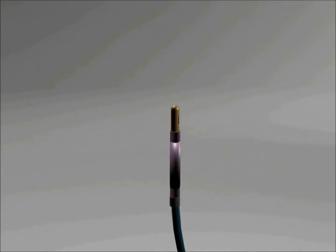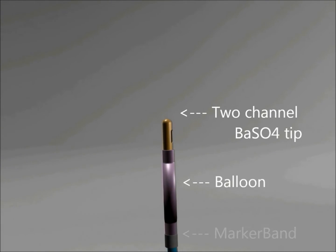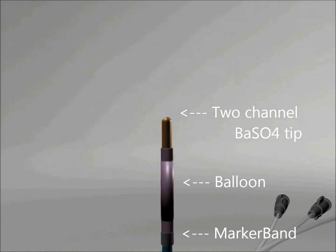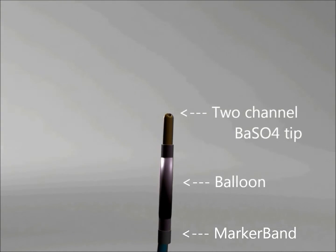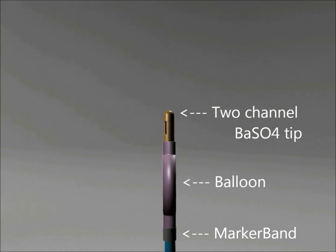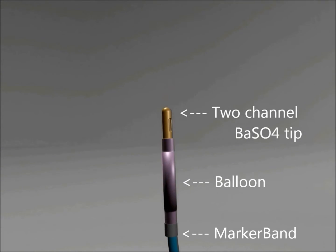The design of the two-channel tip and catheter shaft has been chosen specifically to reduce kinks and unwanted interactions with vessel walls. The integrated two-channel barium sulfate tip and use of one marker band allows physicians to clearly observe where the catheter is inserted via fluoroscopy.